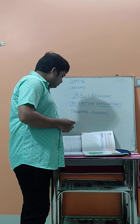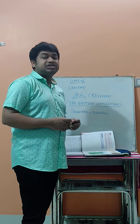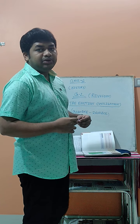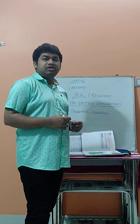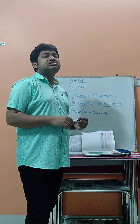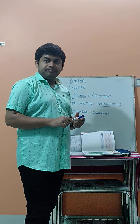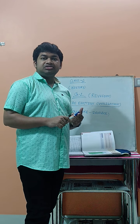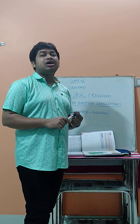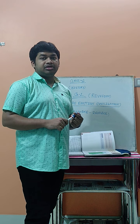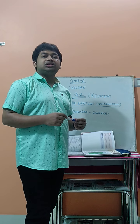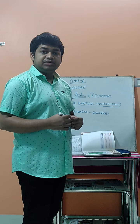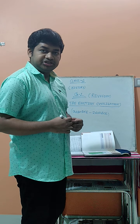The third question is: what are the three unique features of the Egyptian civilization? The three unique features are: first, the pyramids; second, mummification; and third, hieroglyphics. These are the three unique features of the Egyptian civilization.